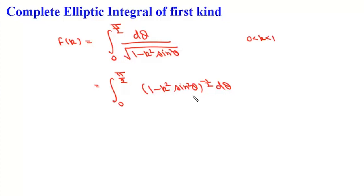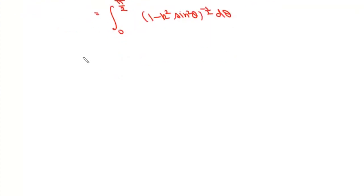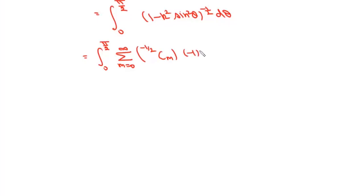We will use the binomial expansion of (1 minus k squared sin squared theta) to the power minus 1/2. We can write this as the integral from 0 to pi/2 of the summation where m varies from 0 to infinity. Since this is a negative and fractional power, the expansion goes up to infinite terms. It becomes: (-1/2 choose m) times (-1)^m times k^(2m) times sin^(2m)(theta) d-theta.